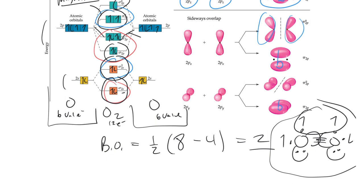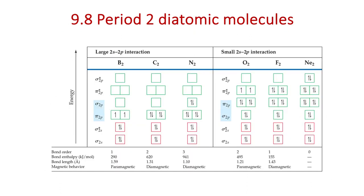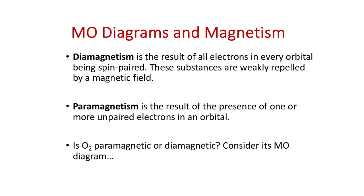Molecular orbital theory shows that the lone pairs in O2 are more complicated than imagined from Lewis structures or valence bond theory. We end up with a net two unpaired electrons from the model. For N2 with only 10 electrons, the last two electrons fill the pi 2p orbitals completely with no unpaired electrons — N2 is diamagnetic. Diamagnetism results when all electrons in every orbital are spin paired, so the molecule is not pulled into a magnetic field.